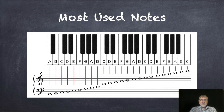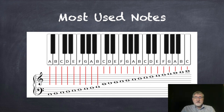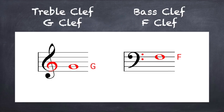As a general principle, low notes on the keyboard are located on the left and high notes on the right. It takes two staves to show the notes on a piano, which are most often used. Piano players usually play the higher notes in the top staff with their right hand, and the lower notes in the lower staff with their left hand.